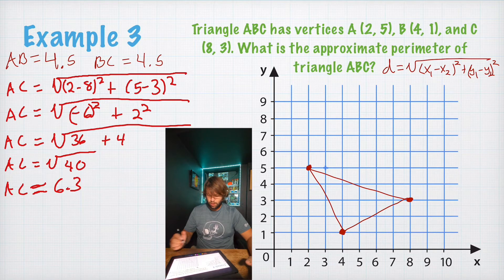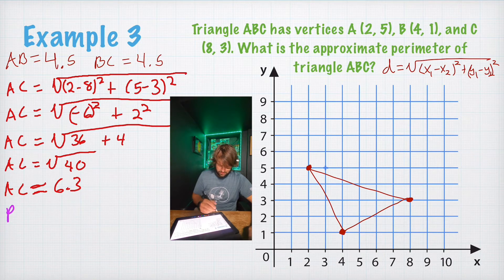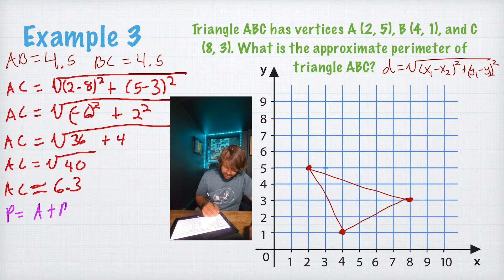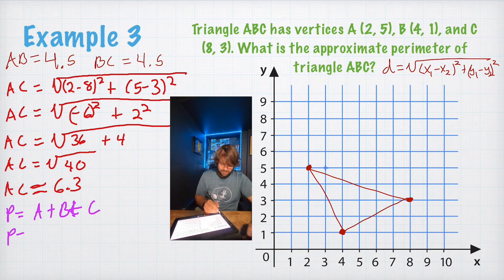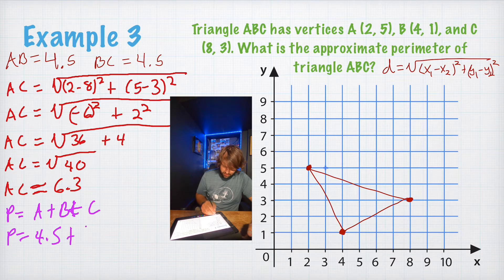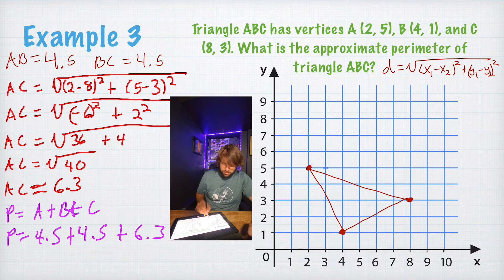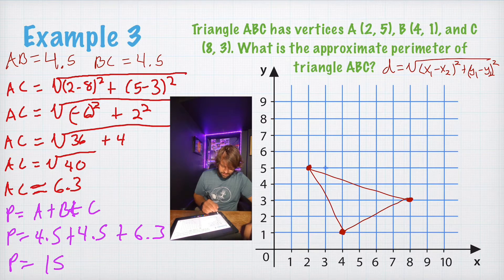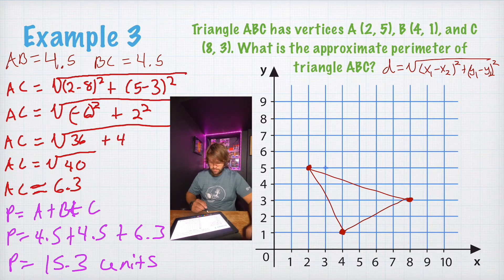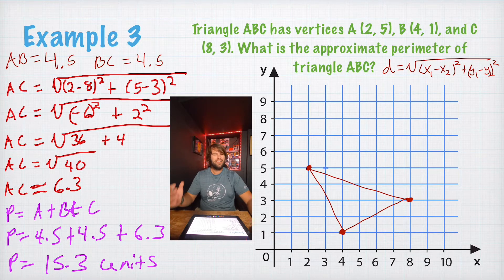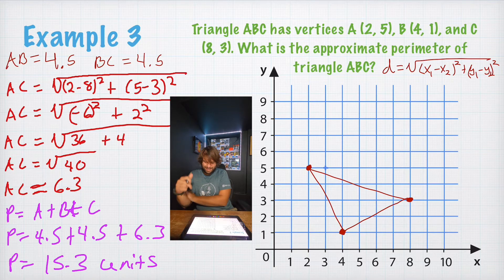So, to solve this, all we have to do now is add up all three sides, right? Because perimeter, P, equals A plus B plus C. So, all the sides add together. So, perimeter equals 4.5 plus 4.5 plus 6.3, which gives us perimeter equals 15.3 units. Yeah. There you go. That was our longest example. So, let's just finish this lesson out and get the heck out of here.